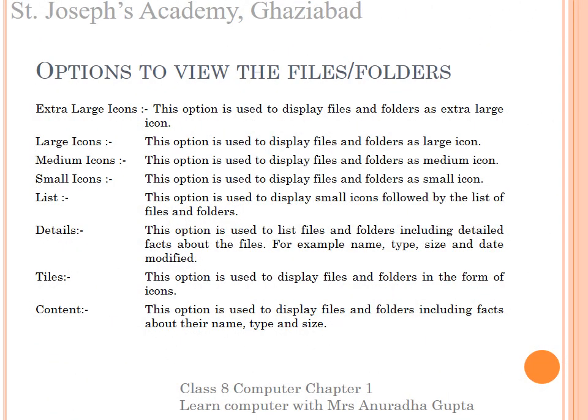Here are the options to view the files or folders. Number 1, Extra Large Icons: this option is used to display files and folders as extra large icons. Number 2, Large Icons: this option is used to display files and folders as large icons. Number 3, Medium Icons: this option is used to display files and folders as medium icons.